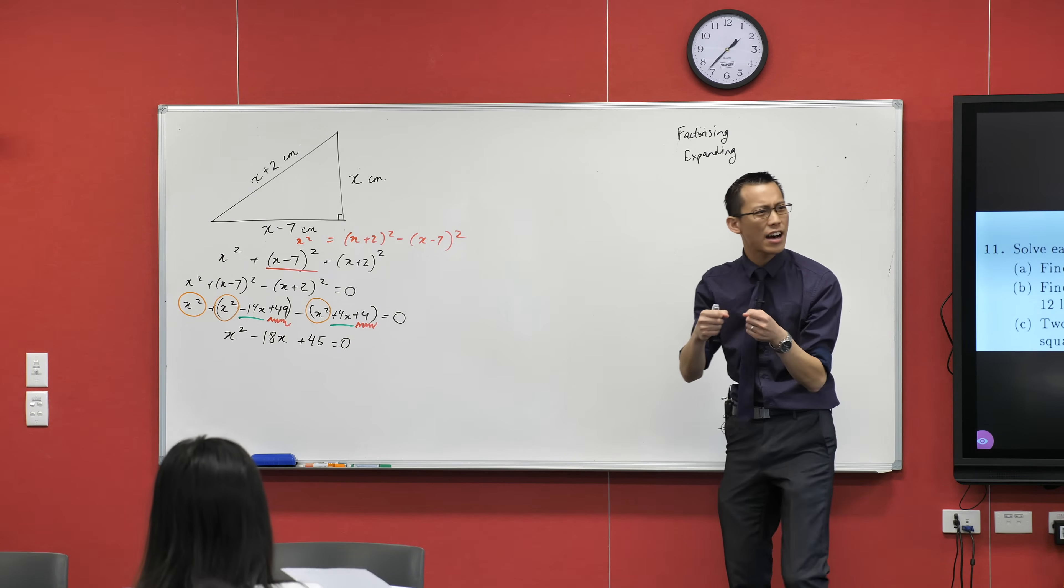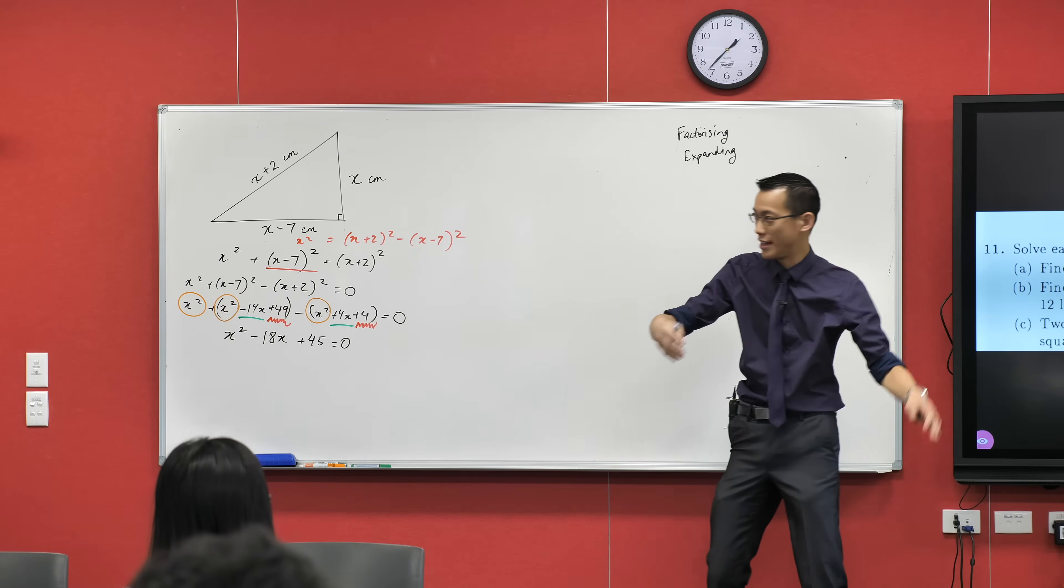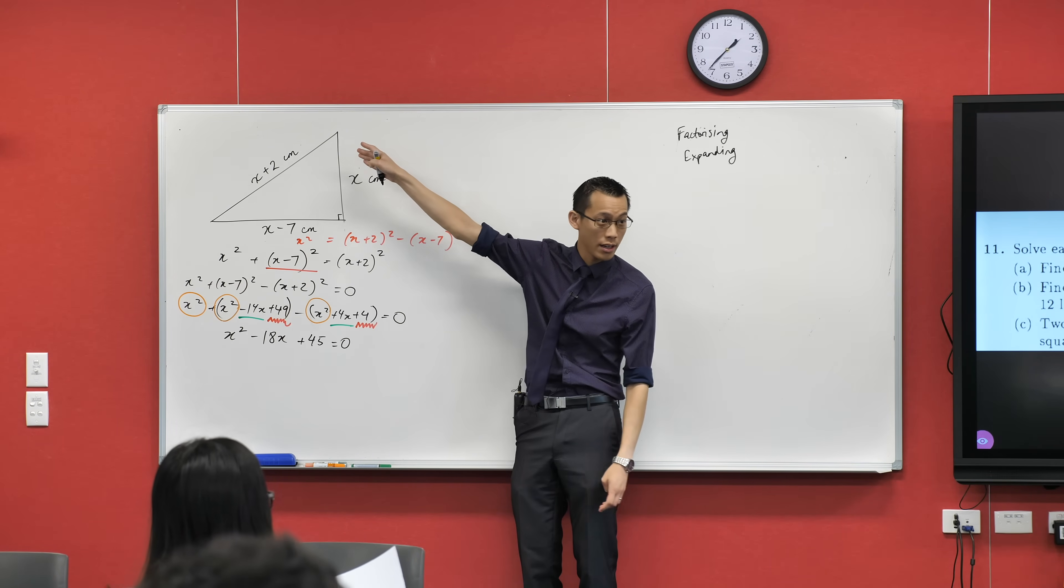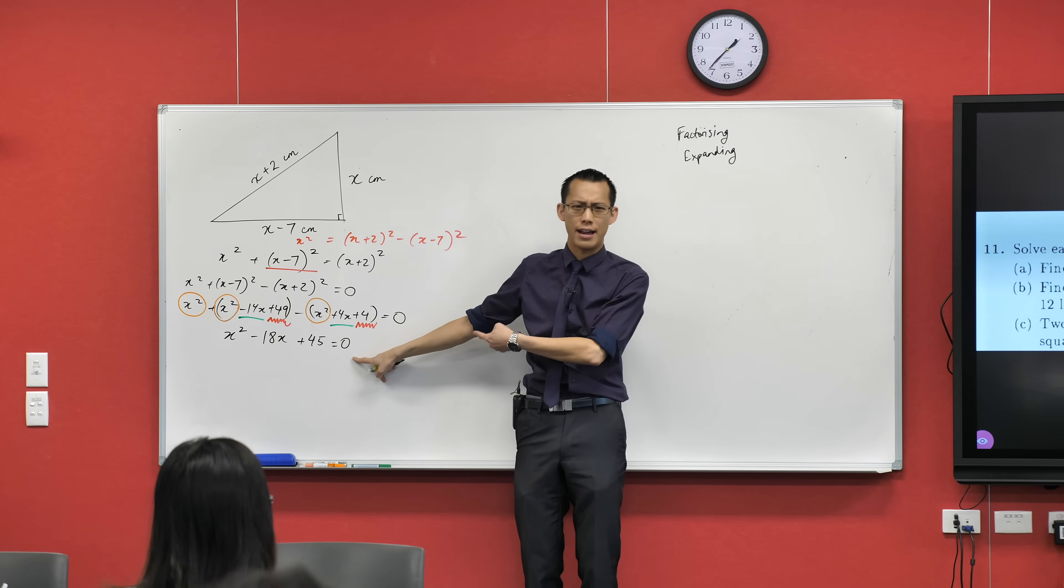And then what I have left last is this constant term right there: 49 minus 4, that's 45. Now this is—you see how so many problems, a lot of our effort is to take a problem that looks weird and confusing and translate it into a problem that, oh, I'm familiar with this, I know how to handle these.